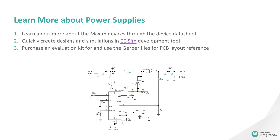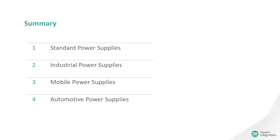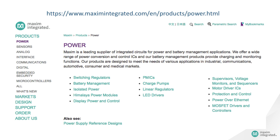Evaluation kits of the products are also available to buy for a quick evaluation of the device. To summarize, in this course we have given an overview of power supplies used in different markets. We covered basics of standard, industrial, mobile, and automotive power supplies, and different requirements of power levels, size, and load regulation are explained. For more information, please go to our website at www.maximintegrated.com under Products and Power. We hope you enjoyed this video and see you again in another educational video of Maxim Integrated.